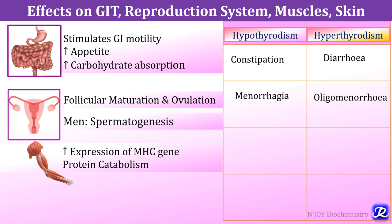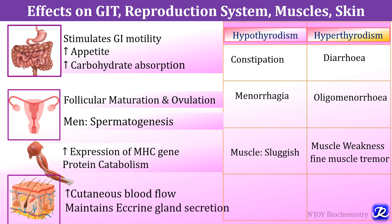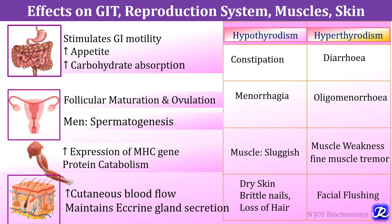Effects on muscle include increased expression of myosin heavy chain gene and increased protein catabolism. In hypothyroidism, muscles become sluggish and there is muscle weakness and fine muscle tremor. In skin, thyroid hormone increases cutaneous blood flow and maintains eccrine gland secretion — sweat secretion. Decreased thyroid level leads to decreased sweat secretion, dry skin, brittle nails and hair loss; hyperthyroidism is associated with facial flushing.